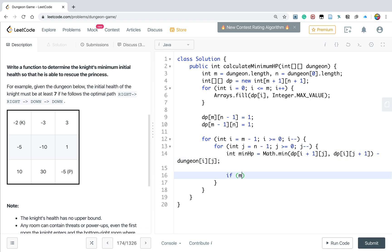And if minimum hp is less than 1, when it's less than 1, that means maybe the dungeon[i][j] is a larger positive integer. So we should at least keep it equal to 1. So dp[i][j] will equal to 1. Else dp[i][j] will just be minimum hp.